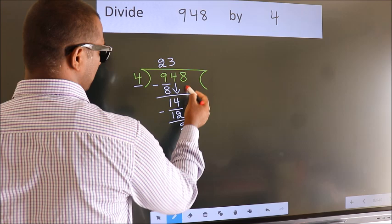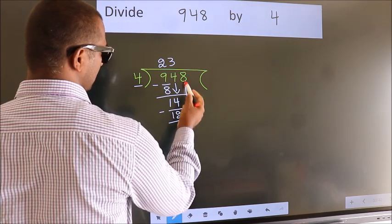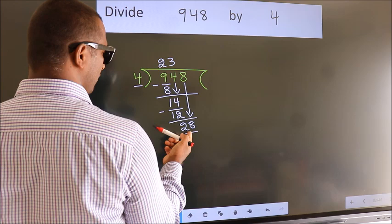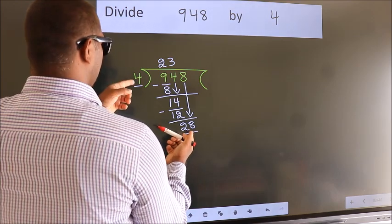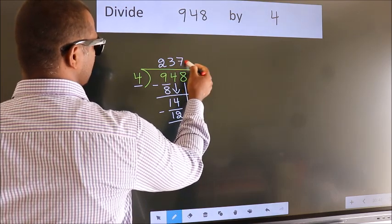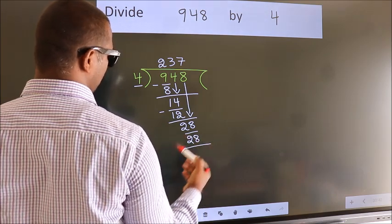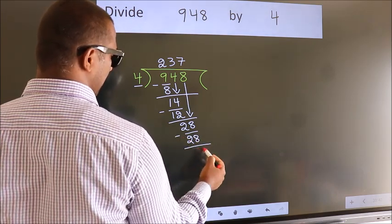After this, bring down the beside number. So 8 down, so 28. When do we get 28 in 4 table? 4 times 7 is 28. Now we subtract. We get 0.